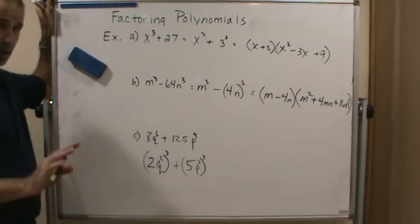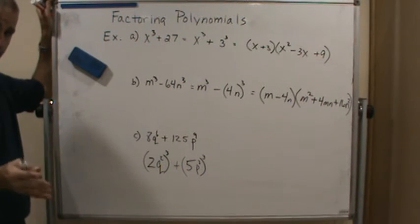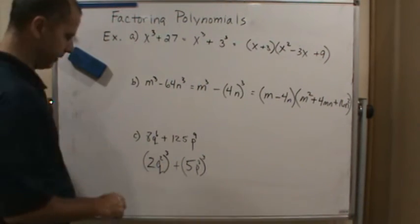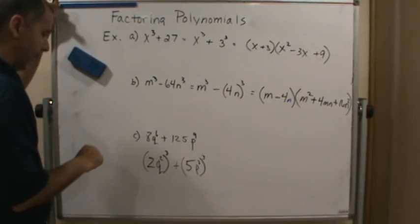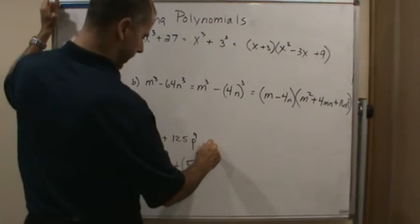And again, this is all based on the power rules that I'm using. Power rules for exponents. Remember those? So now, it's a sum of 2 cubes. And now I know how to rewrite this.